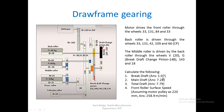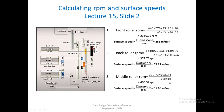So how to calculate the draft values: the brake draft comes out to be 1.07, main draft 7.28, total draft 7.79, and the front roller surface speed comes to 258.9 meters per minute.